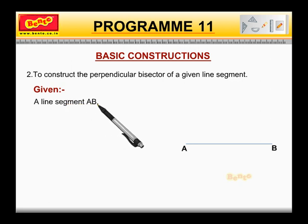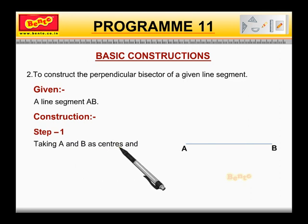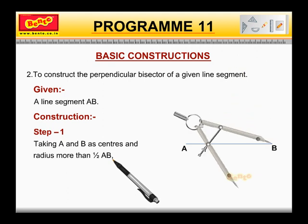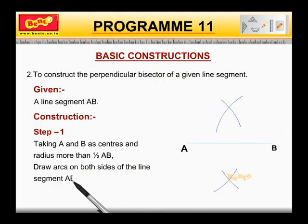Now let us look at the construction part. Construction Step 1. Taking A and B as centers, the radius more than half AB, draw arcs on both sides of the line segment AB to intersect each other.